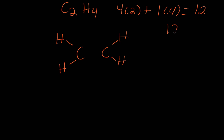So 12 minus eight equals four. We have four valence electrons to work with, and we need to have these carbons to have an octet of electrons. And the only way we can do that is by putting a double bond here.